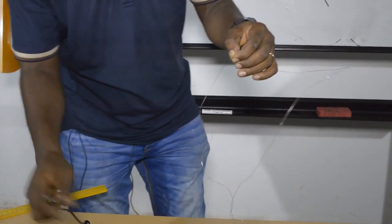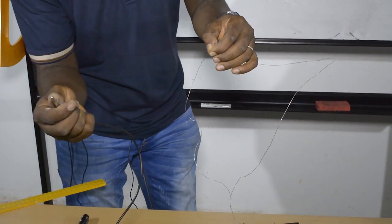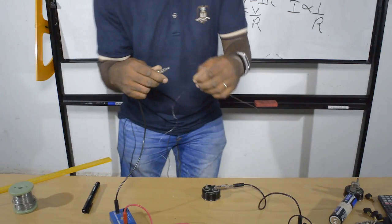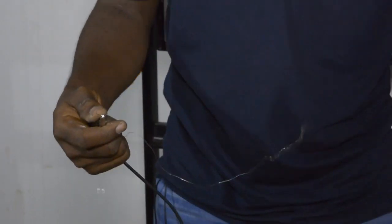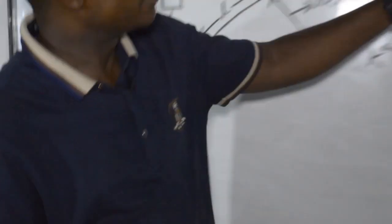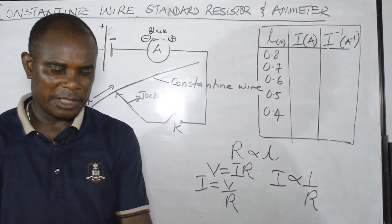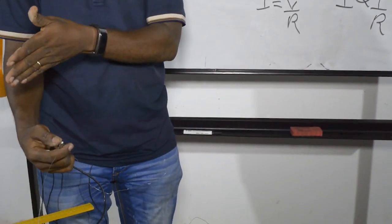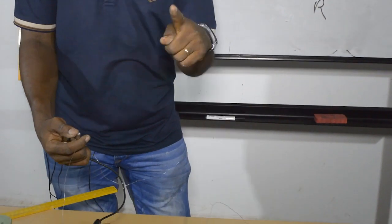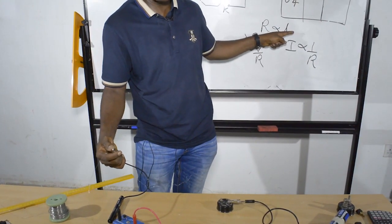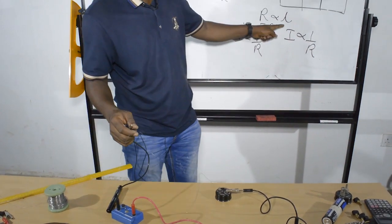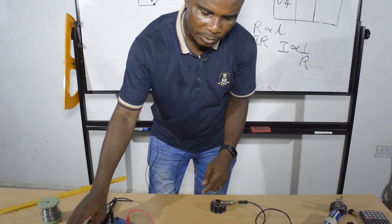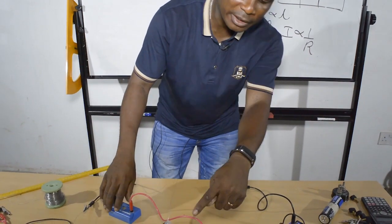I take the crocodile clip and attach it at the 80 cm mark. This whole length is now 0.8 meters. When the length increases, you expect the resistance to increase because resistance is directly proportional to length. When the resistance increases, of course, you expect the current to drop. Let's see what the current reading is right now.